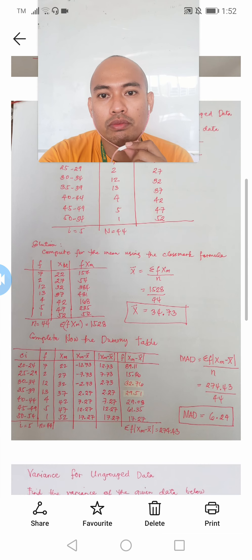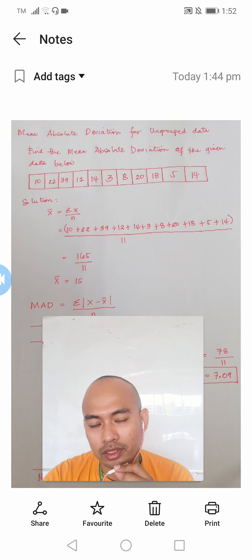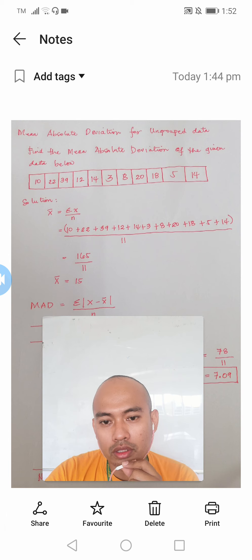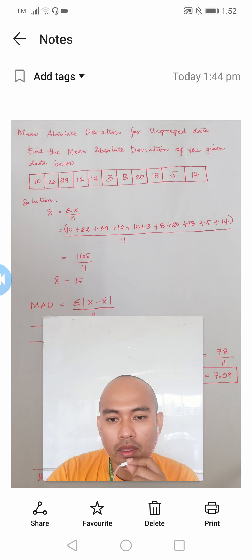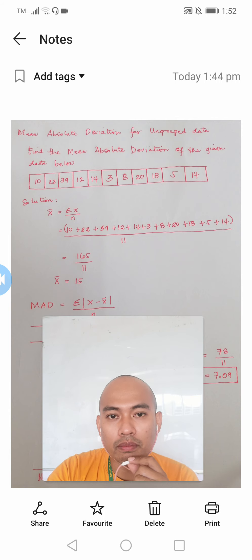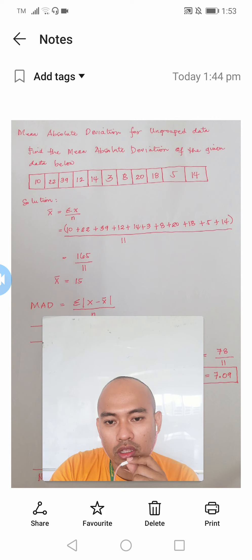Now for the mean absolute deviation, the MAD — M-A-D — which is the acronym of the mean absolute deviation. I have already presented in my previous video about the measures of variability, specifically the mean absolute deviation, that there are two formulae to be used for you to be able to come up with the value of the MAD. These formulae depend on the nature of your data.